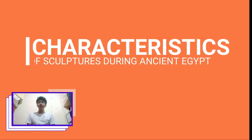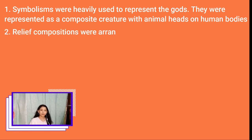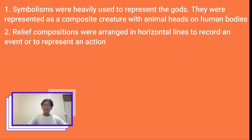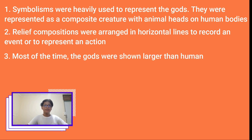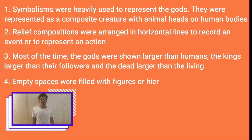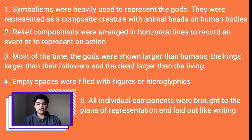Here are the characteristics of sculptures during the Ancient Egypt era. Number one is symbolism — they were heavily used to represent the gods, presented as composite creatures with animal heads or human bodies. Number two, relief compositions were arranged in horizontal lines to record an event or represent an action. Number three, the gods were shown larger than humans, kings larger than their followers, and the dead larger than the living. Number four, empty spaces were filled with figures or ornamental elements, and all individual components were brought to the plane of representation and laid out like writing.